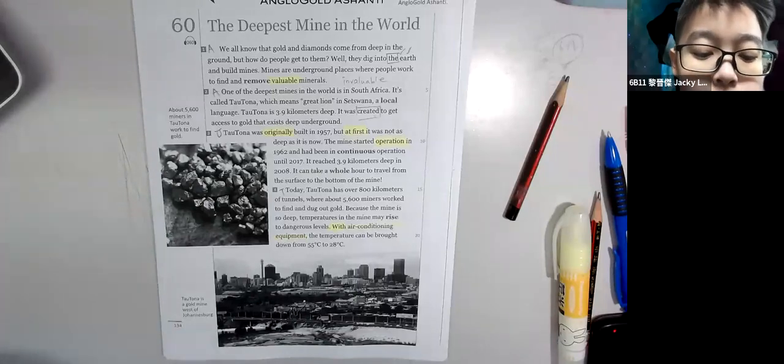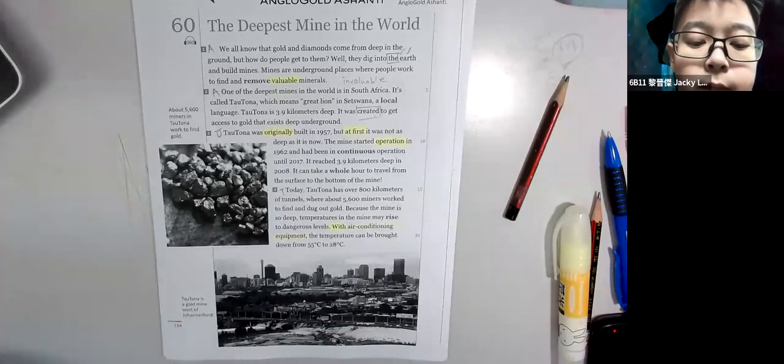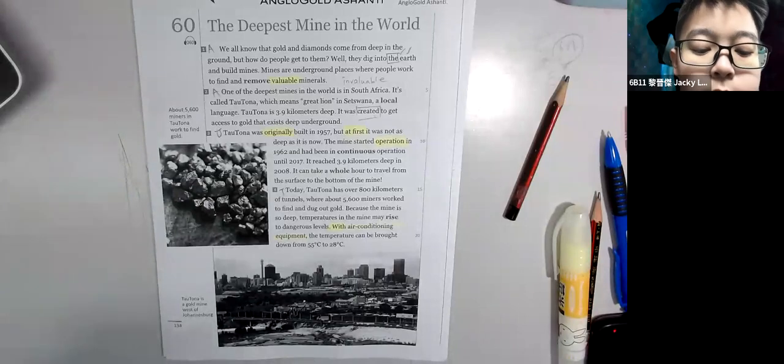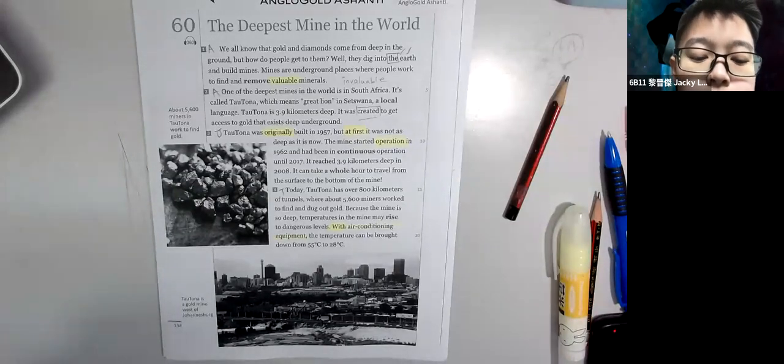Taotonga was originally built in 1957, but at first it was not as deep as it is now. The mine started operation in 1962 and had been in continuous operation until 2017. It reached 3.9 kilometers deep in 2008.